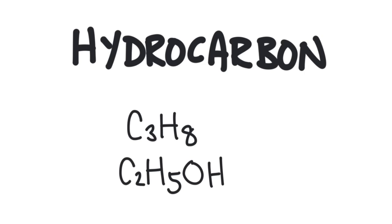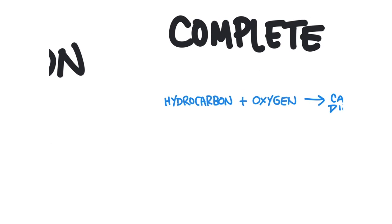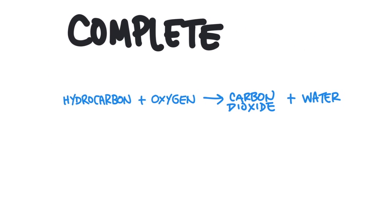So no matter what the hydrocarbon is, we can have any type of hydrocarbon and we're always going to produce the same stuff. In a complete combustion reaction, the general formula is: the hydrocarbon reacts with oxygen gas, and we end up with the same thing every single time — carbon dioxide and water. No matter what the hydrocarbon is, we always produce CO2 and H2O.